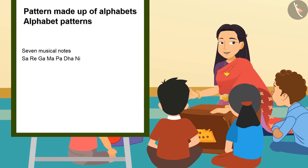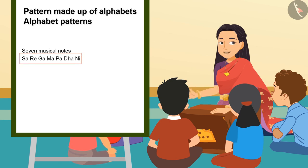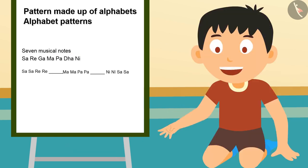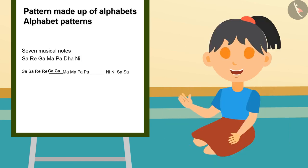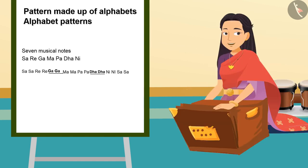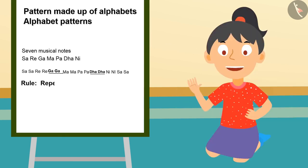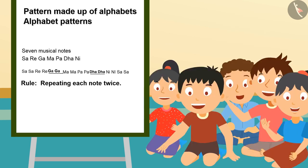Before making patterns, one should remember that there is no fixed rule — you can make your own rule to make patterns. These are the seven musical notes. Can you fill in the blanks? After Re Re, will come Ga Ga. After Pa Pa, will come Dha Dha. You have done it so quickly! Is there any rule in this pattern? Yes, we are repeating each note twice.